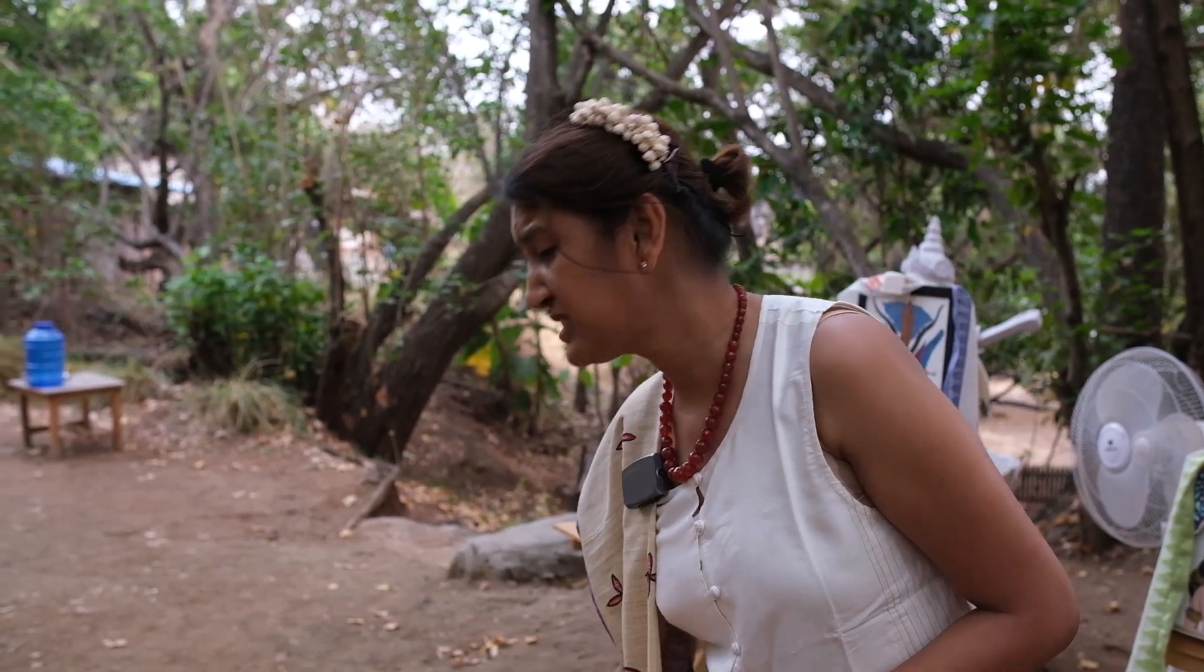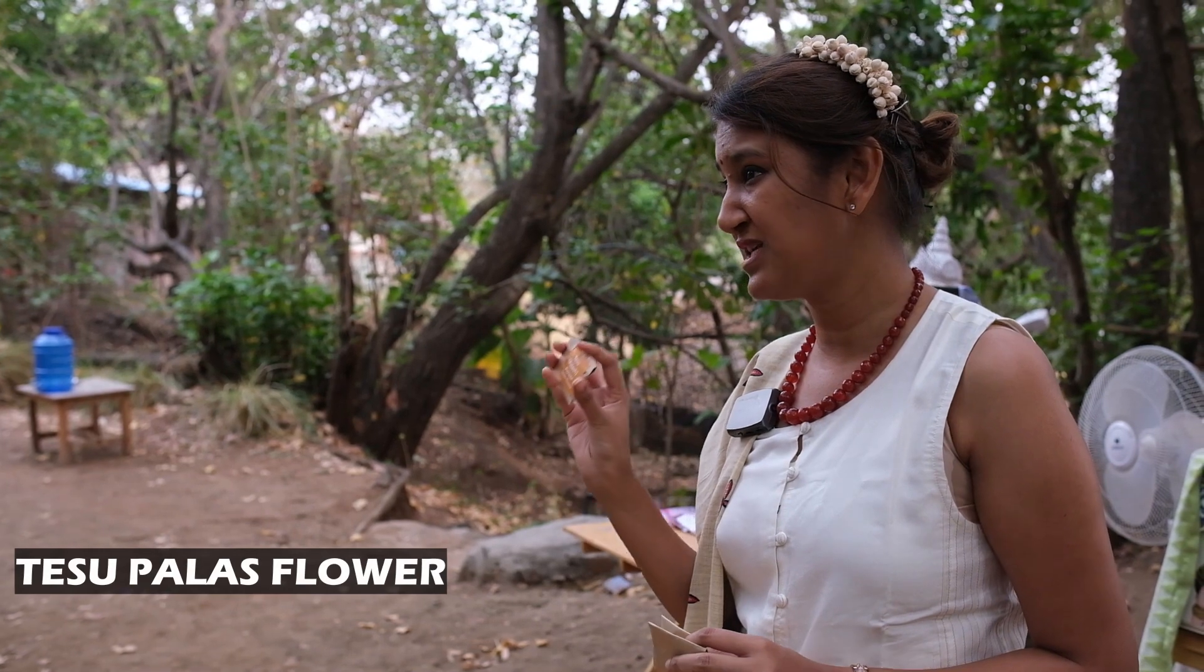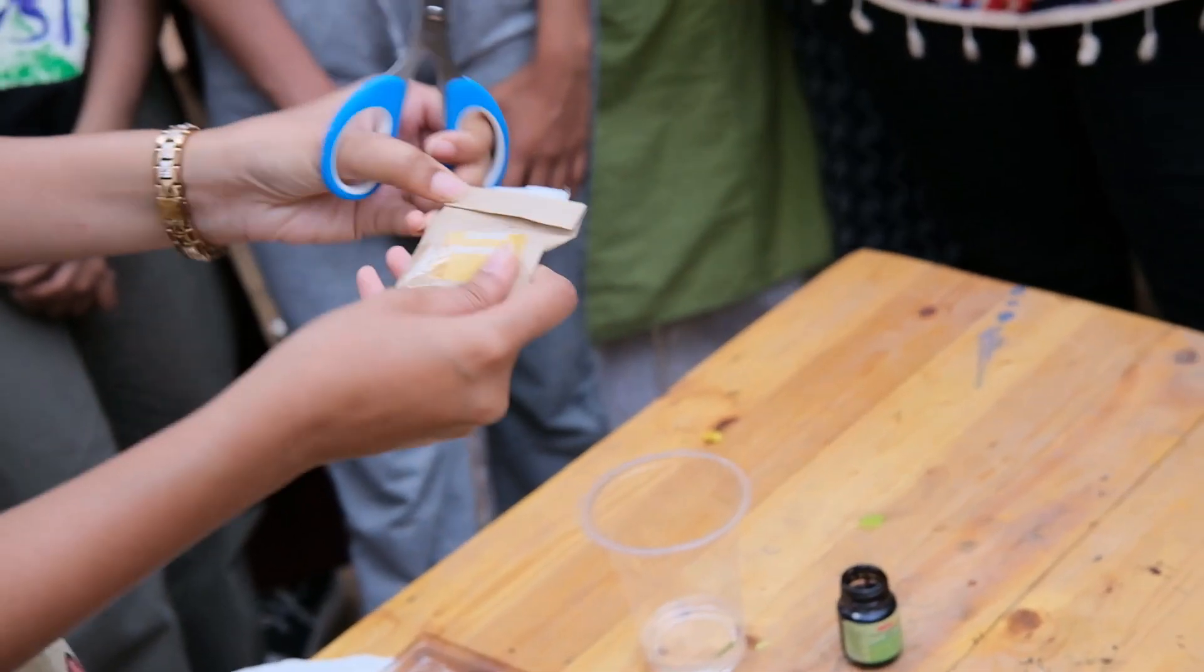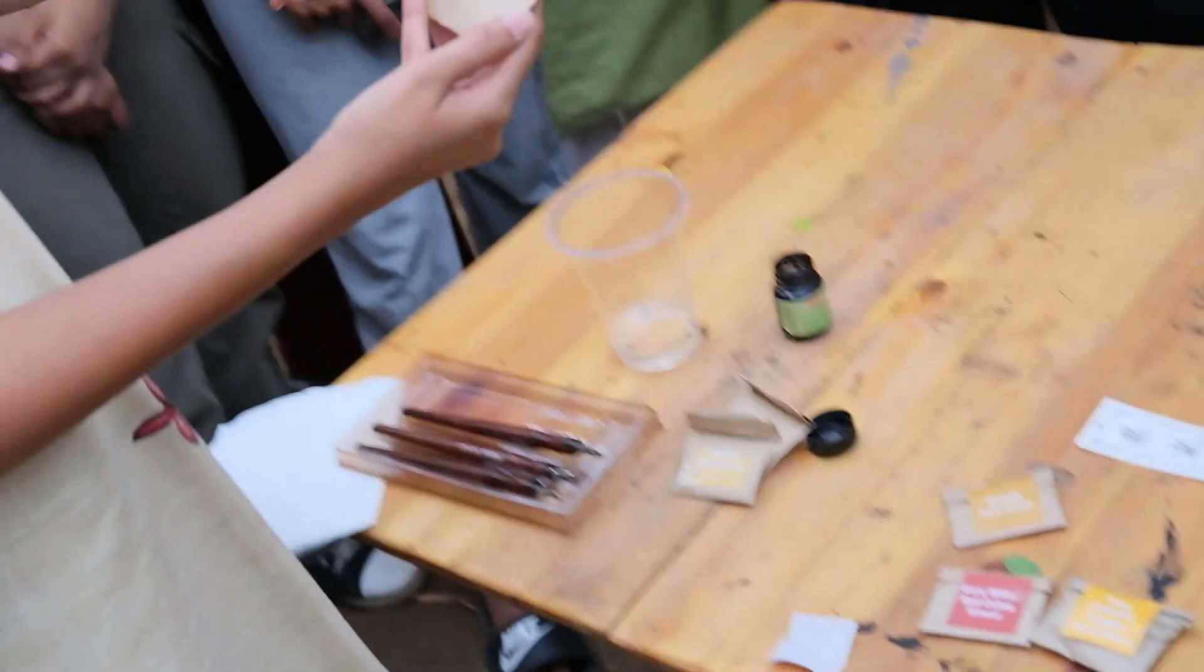And this is known as tesu or palash flowers. These are natural flowers which are dried. This makes a color of three.